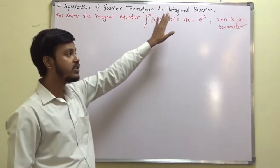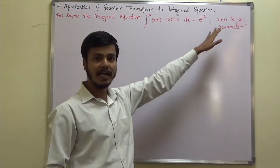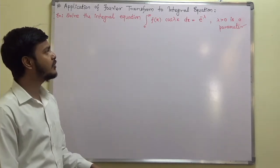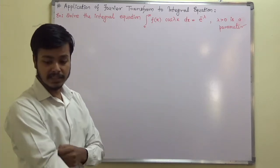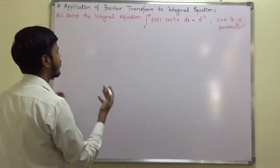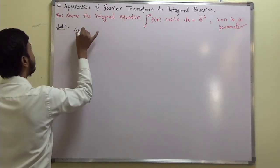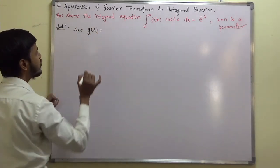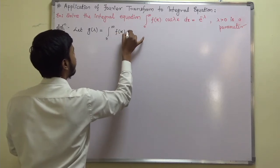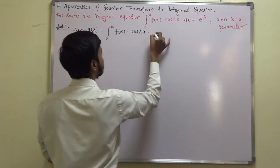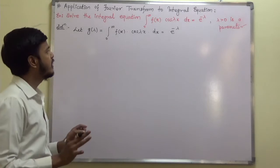Under this application of Fourier transform to integral equations, an integral equation is given to you. The problem says: solve the integral equation, where lambda is the parameter. Whatever integral equation is given, you take the integral as some function. So let g of lambda be equal to: g(λ) = integration from 0 to infinity of f(x) · cos(λx) dx = e^(−λ).